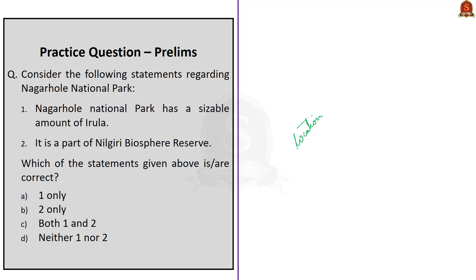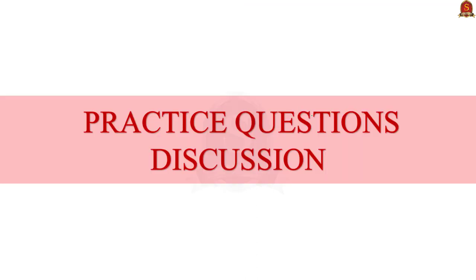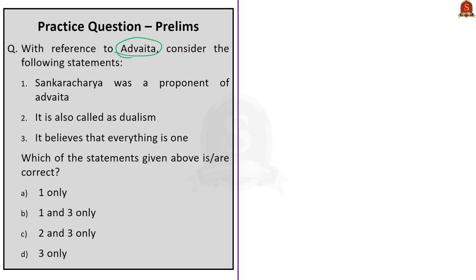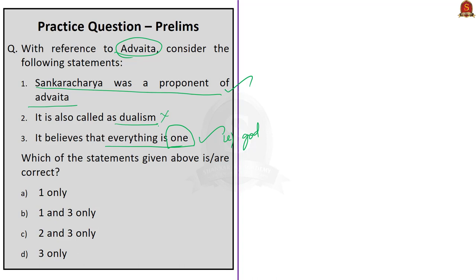Now let us see some prelims practice questions. The first question is about Advaita — find the correct statement: (1) Shankaracharya was a proponent of Advaita, (2) it is also called dualism, (3) it believes that everything is one. Statement one is correct — Shankaracharya was a proponent of Advaita. Statement three is also correct — it believes everything is one. Statement two is wrong — it is called non-dualism, not dualism. The correct answer is option B: one and three only.